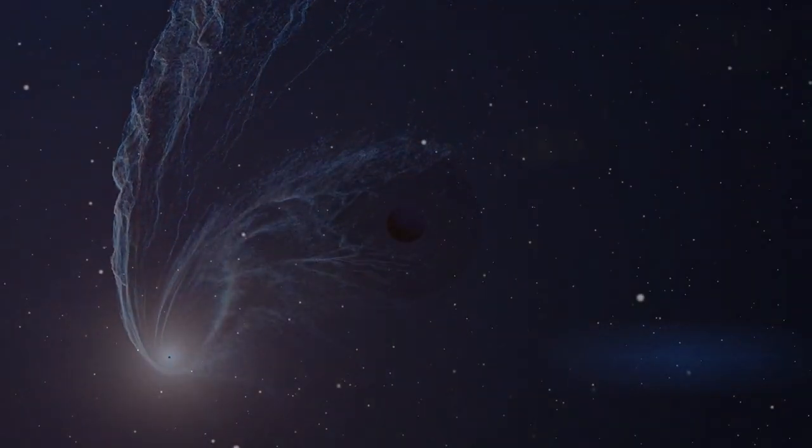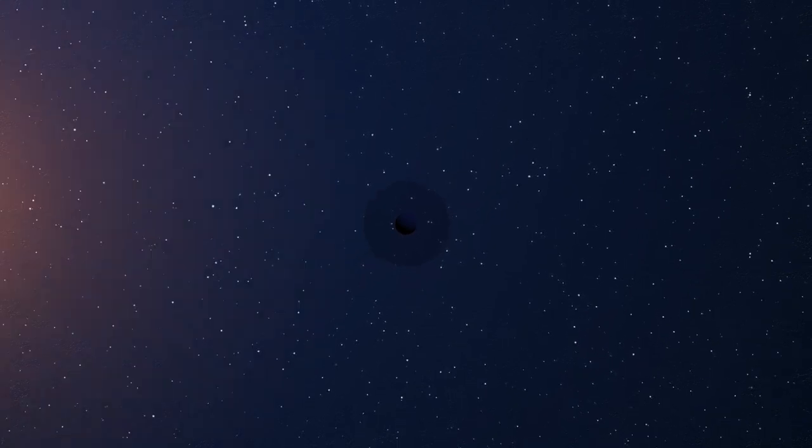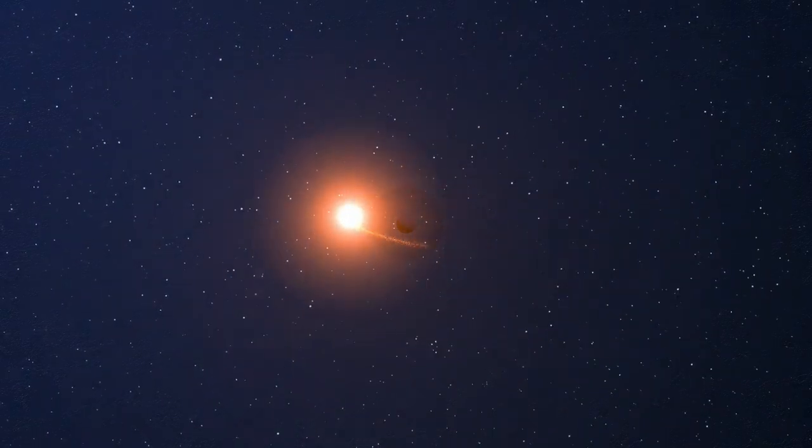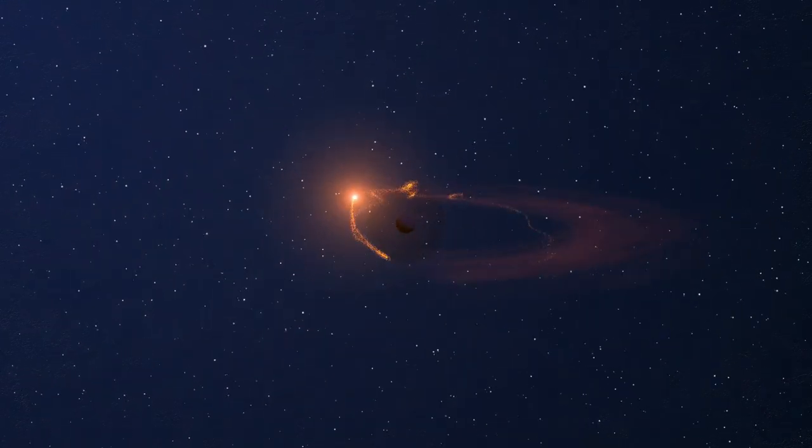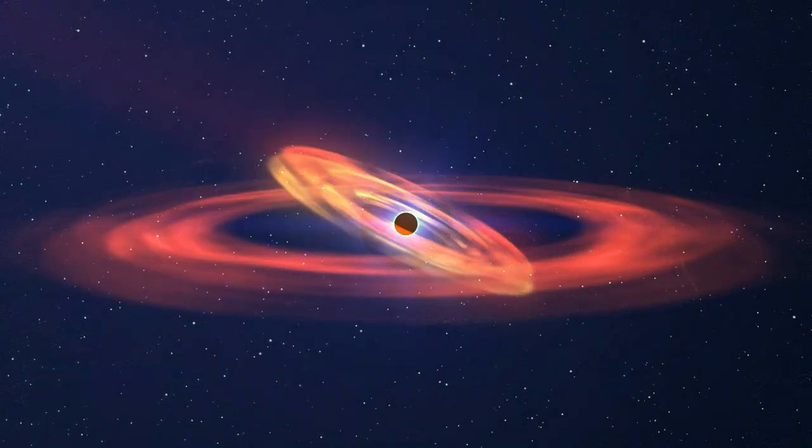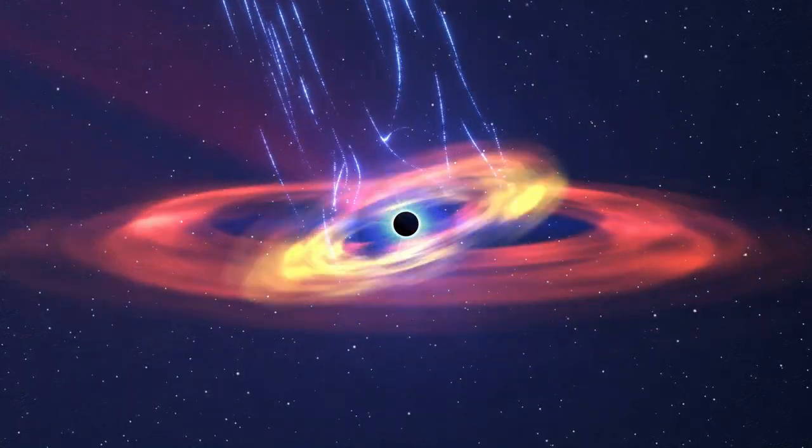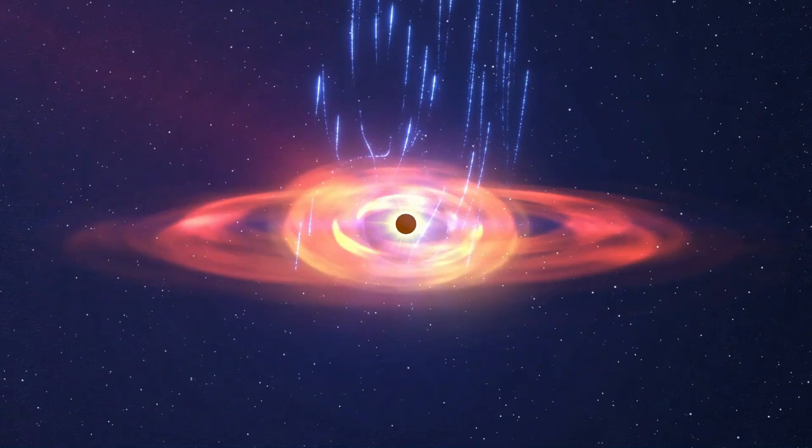The team observed the x-ray bursts that followed the star's demise for months. These bursts, emitted from the vicinity of the black hole, helped them track the wobble of the accretion disk. The black hole's spin influences the disk, making it sway until it matches the black hole's rotation speed. By monitoring this wobble, they could gauge the black hole's rotation.